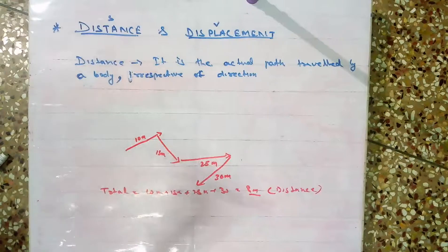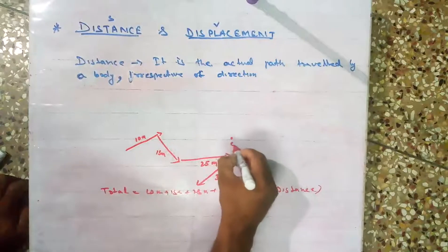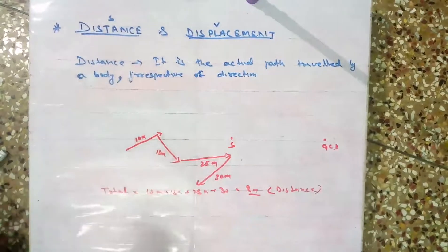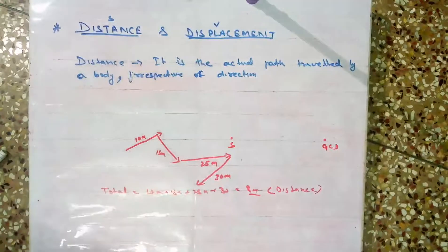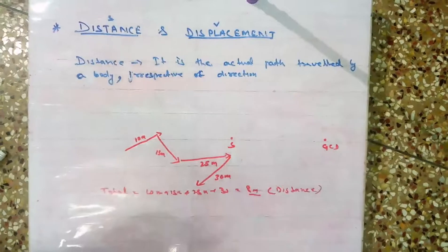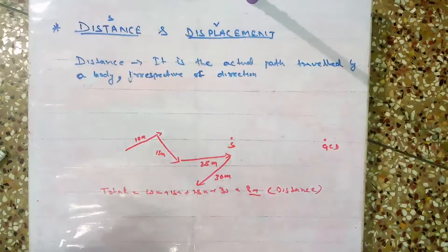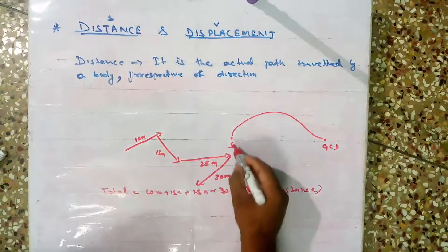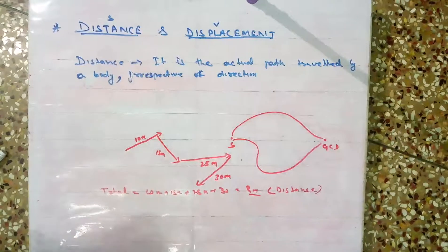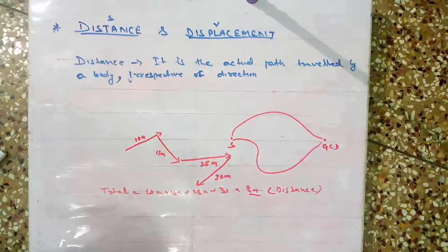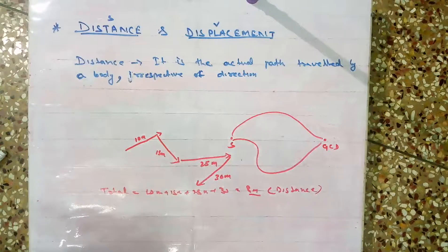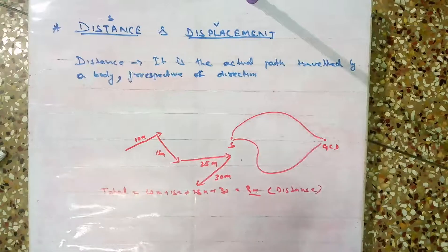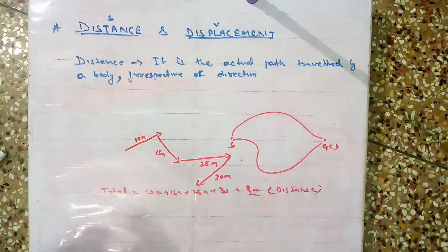Another example: suppose this is our school and here is our GCD ground. When there is some parade there on 15 August, we started from our school. Some people may go this path, come directly, and some people go through the underground, some people may go through the overbridge. Some other people may take different paths. Did they all travel equal distances? No, they'll be different. According to their path they will travel different distances. Whatever the path they travel, that is their distance.